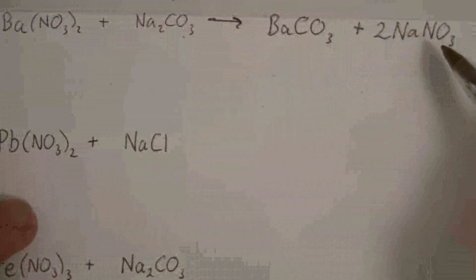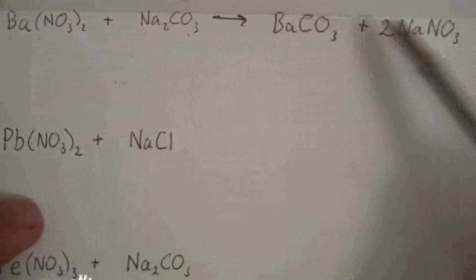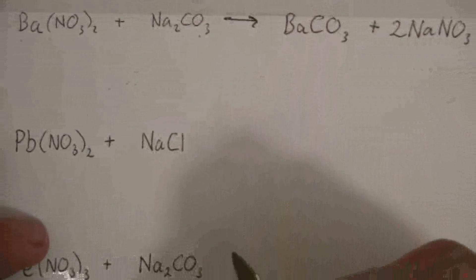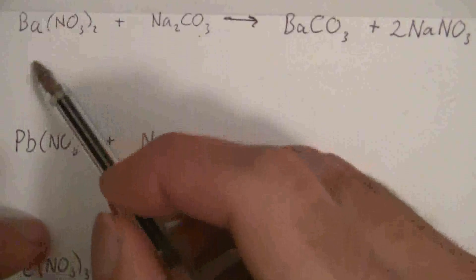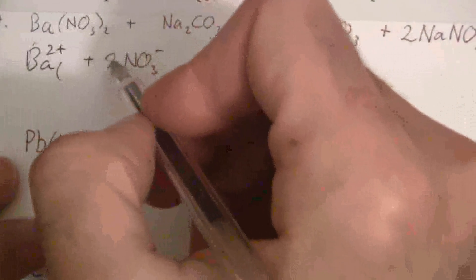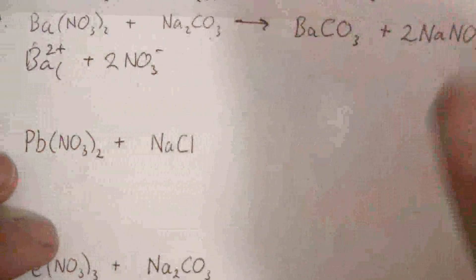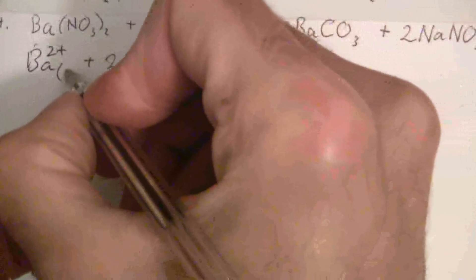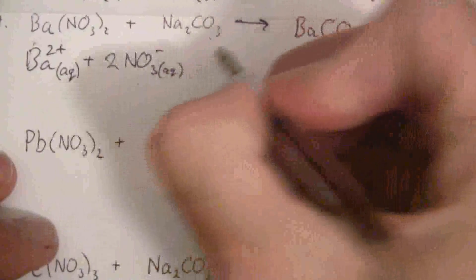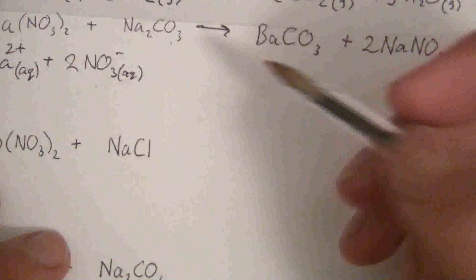Now we need to look at each compound and identify whether it is soluble or insoluble, referencing those solubility tables in your textbook. All nitrates are soluble, so Ba(NO3)2 splits into Ba²⁺ ions and 2 NO3⁻ ions — these are aqueous since all the drops were solutions dissolved in water. And sodium carbonate: all compounds of alkali metals are soluble, so Na2CO3 is also soluble.